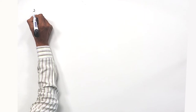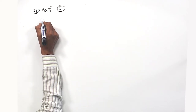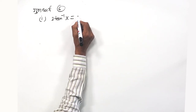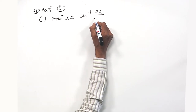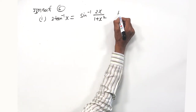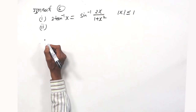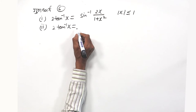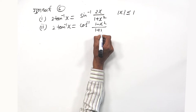Now let's look at the rupantran gundh dharma (transformation properties). The first one: 2 tan⁻¹x is equal to sin⁻¹ of 2x upon 1 plus x square. The second: 2 tan⁻¹x is equal to cos⁻¹ of 1 minus x square upon 1 plus x square.